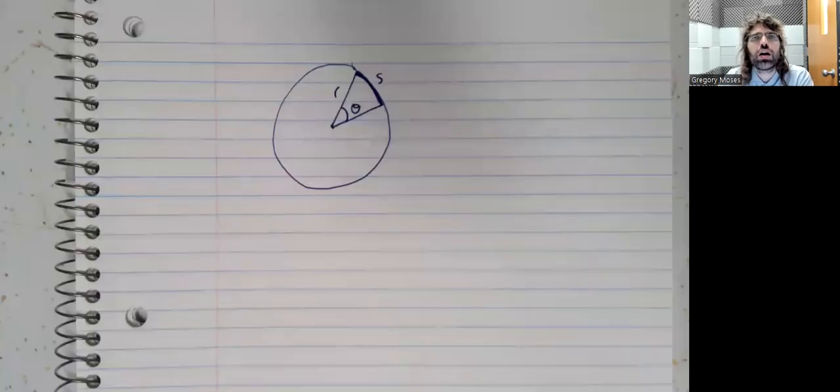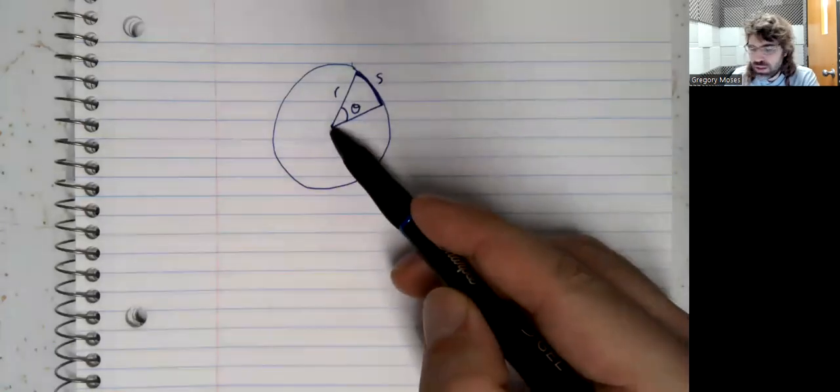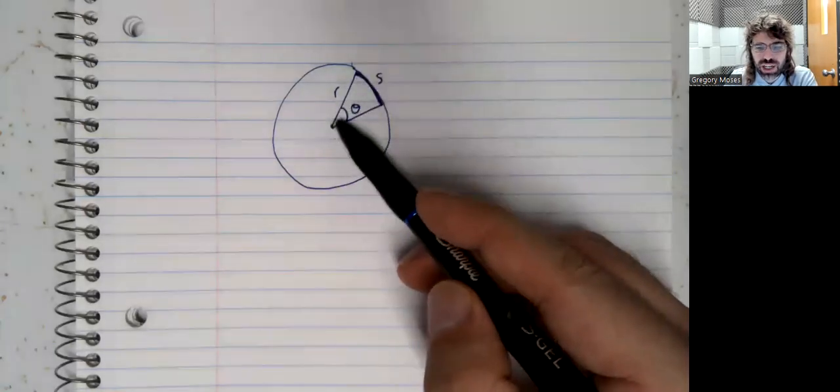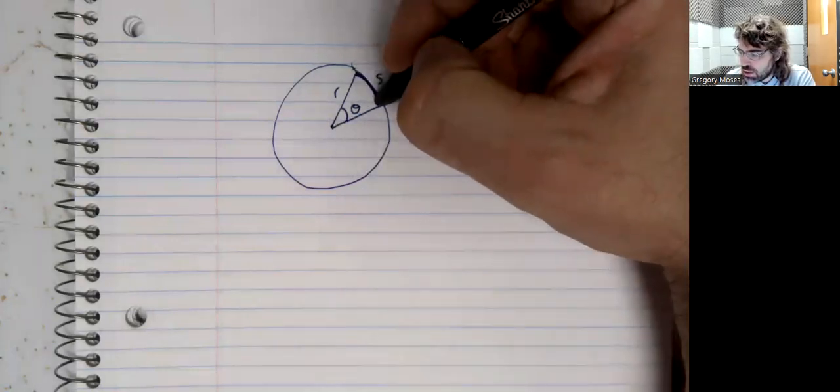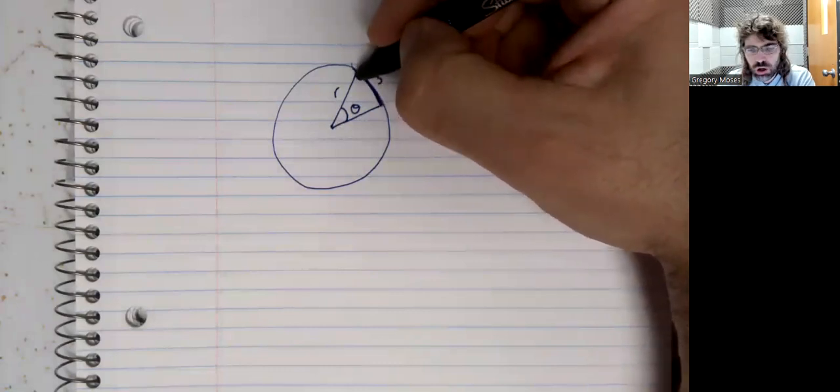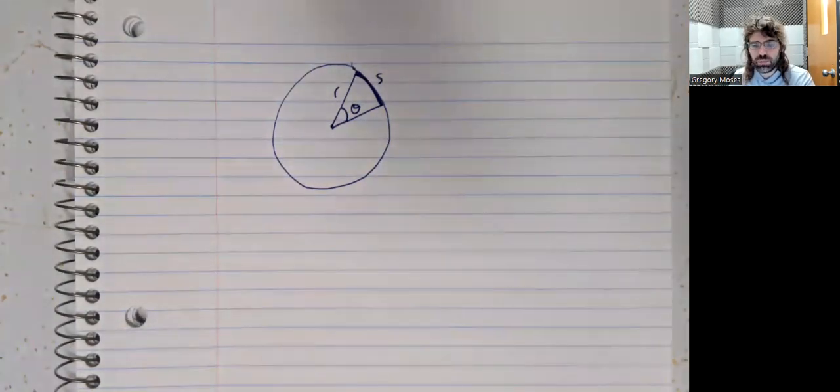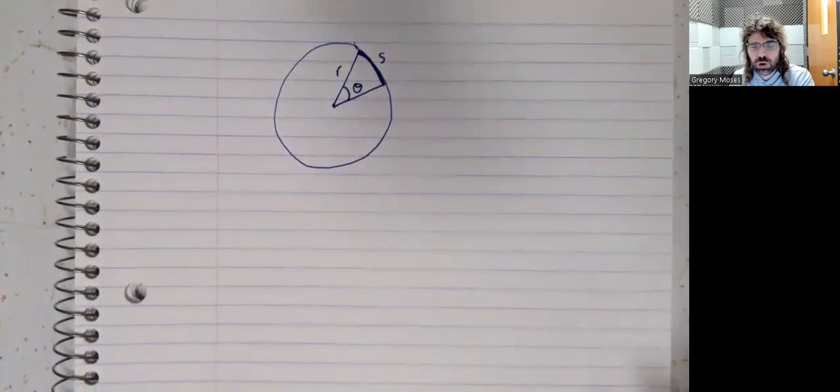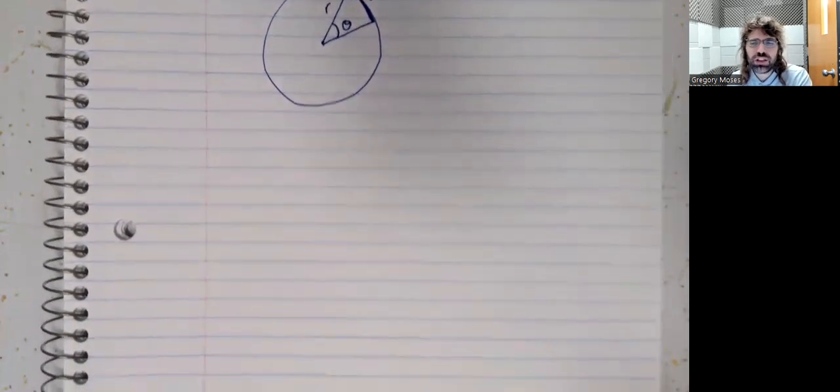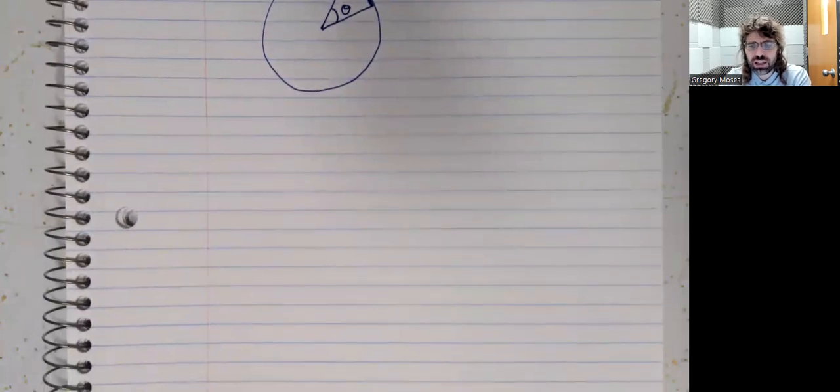So when I say arc-length forms, this is the picture I have in mind. We've got a circle and we've got a pie slice, as it were, and we are looking at the length of this curve here. What could that be? Well, let's go back, before we write any formula down, to the definition of the radian.